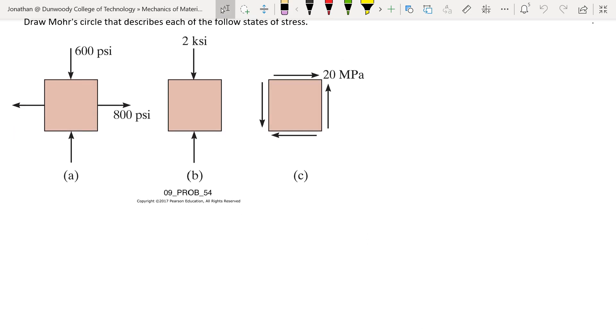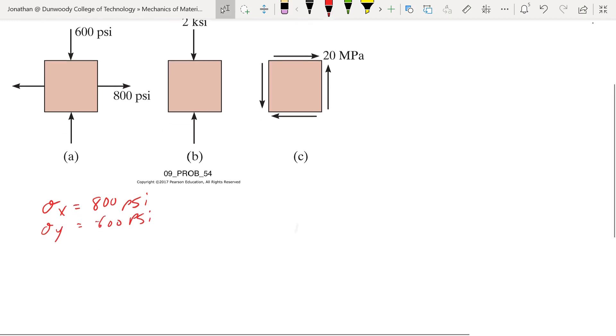So we're going to start out with part A. We have sigma x is 800 psi, sigma y negative 600 psi. So we need to find our center point.